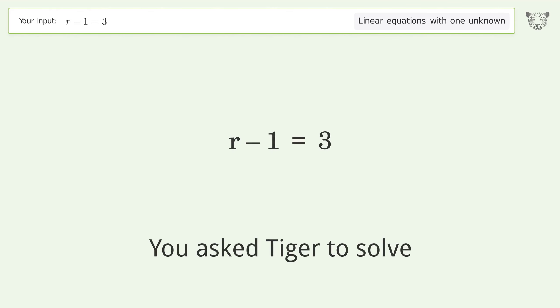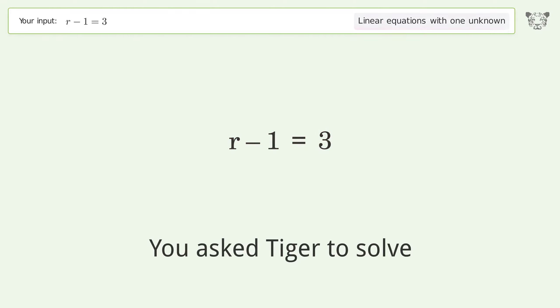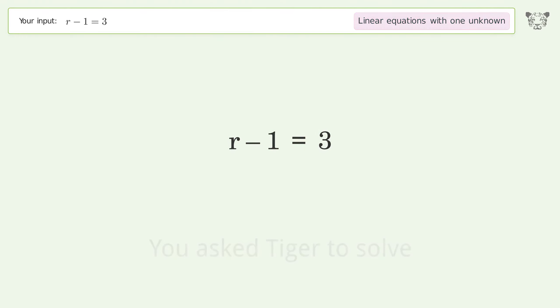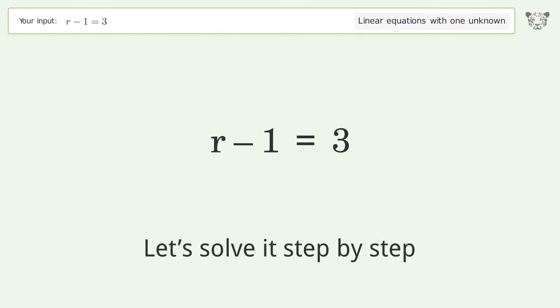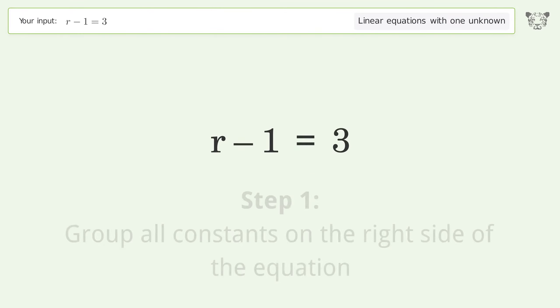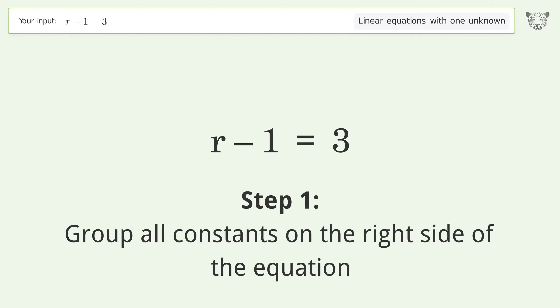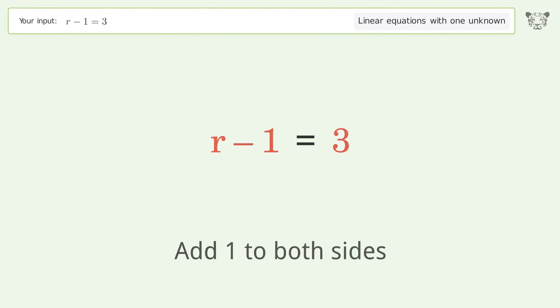We asked Tiger to solve this — it deals with linear equations with one unknown. The final result is r equals 4. Let's solve it step by step. Group all constants on the right side of the equation, then add 1 to both sides.